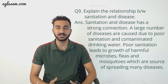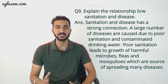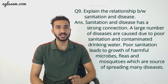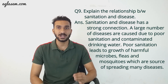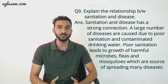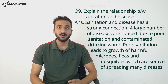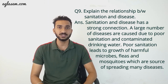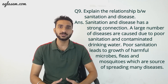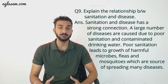Question number 9: Explain the relationship between sanitation and disease. Sanitation and disease have a strong connection. A large number of diseases are caused due to poor sanitation and contaminated drinking water. Poor sanitation leads to growth of harmful microbes, fleas, and mosquitoes, which are sources of spreading many diseases.